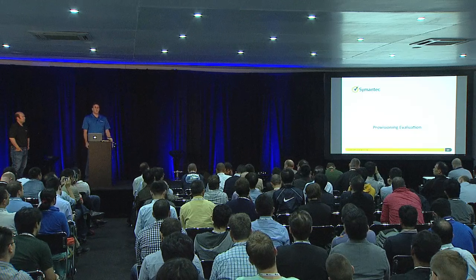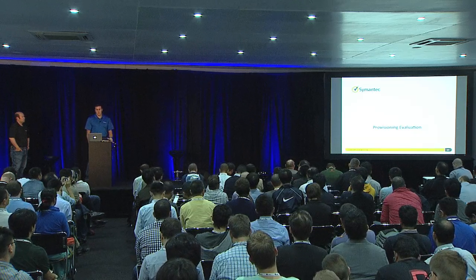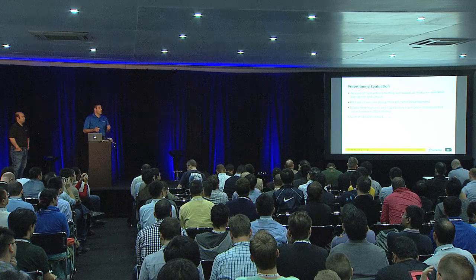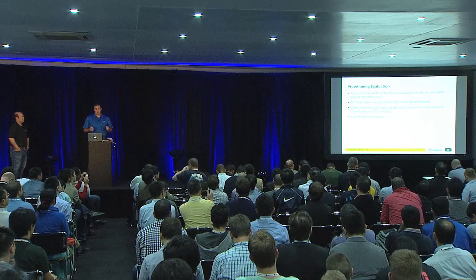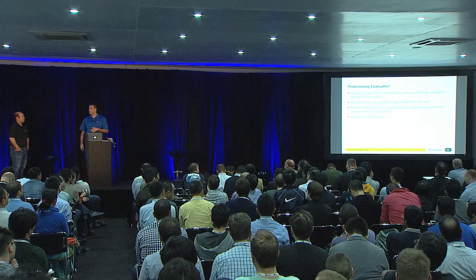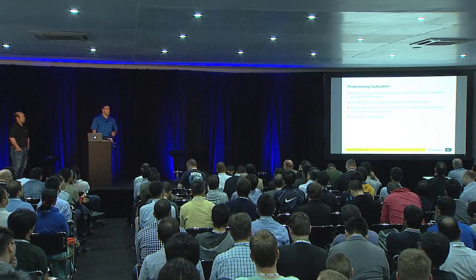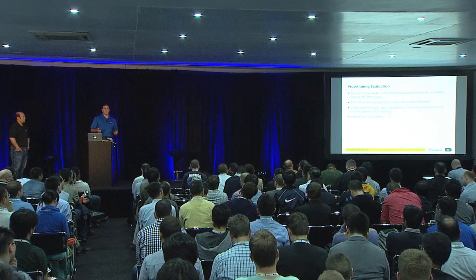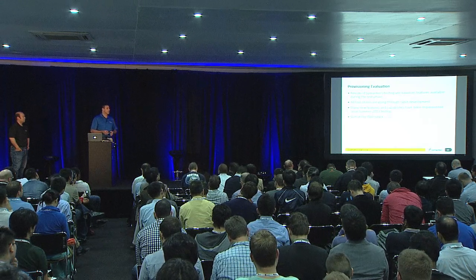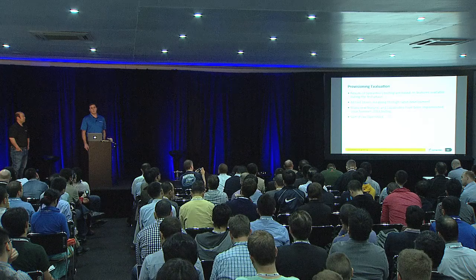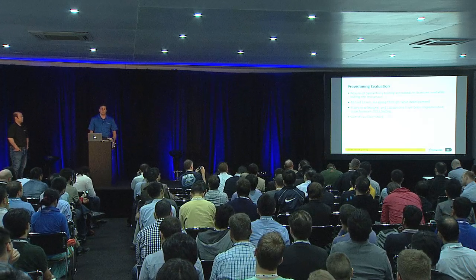Once we defined the network environment topology and the OpenStack architecture we were testing, we got on with the actual provisioning evaluation. One important thing to highlight: all tools were tested based on features available over the summer, from April through September 30th — a three or four month period. All of the vendor tools have been evolving dramatically and rapidly since then, so when you sit down to do your own evaluation, look at all the tools with a fresh set of eyes.